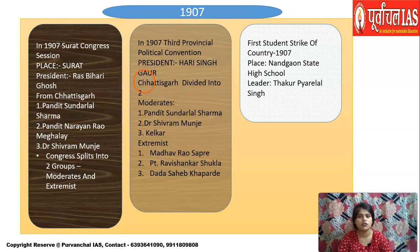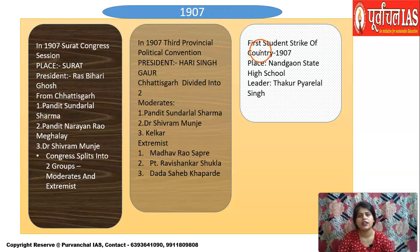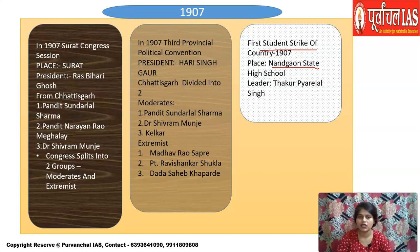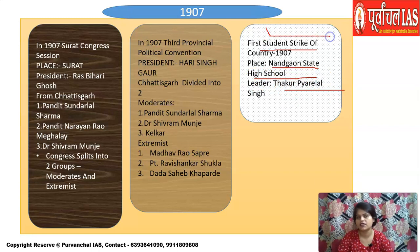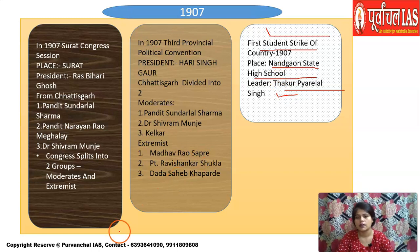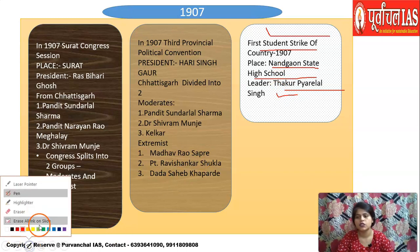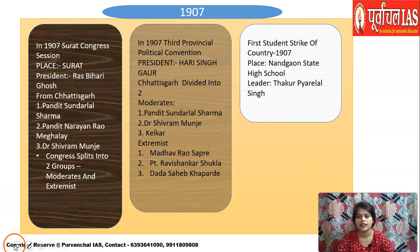In 1907, the first student strike of the country took place at Nandgaon State — now Rajnandgaon — at a high school. This was the first student strike of the country and was led by Thakur Pyarelal Singh. High school students protested under his leadership.